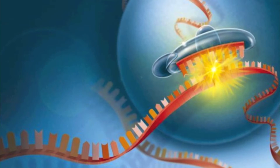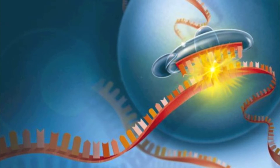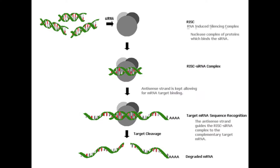While DNA sequencing tells you what's in the genome, RNA-seq will tell you what DNA of the genome is expressed. Multiple types of RNA can be sequenced, including mRNA, tRNA, rRNA, and siRNA.